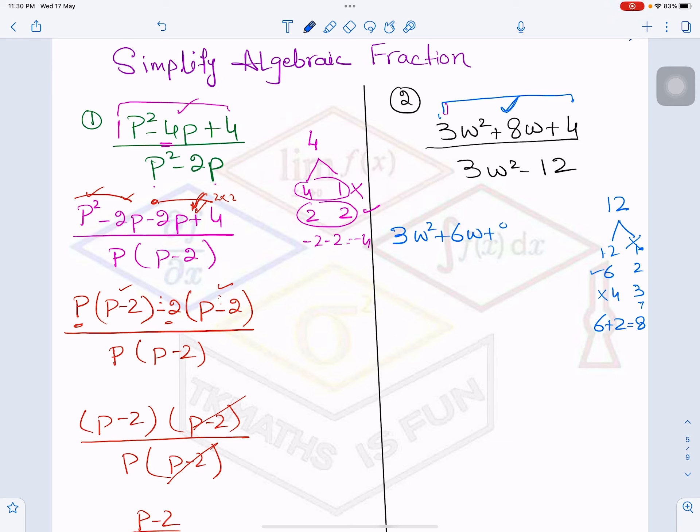So it is 3W² plus 6W plus 2W plus 4. And in the denominator the common is 3, because 4 times 3 is 12. So I am left here with 3(W²-4). This is very interesting, the denominator. I will come back to it.